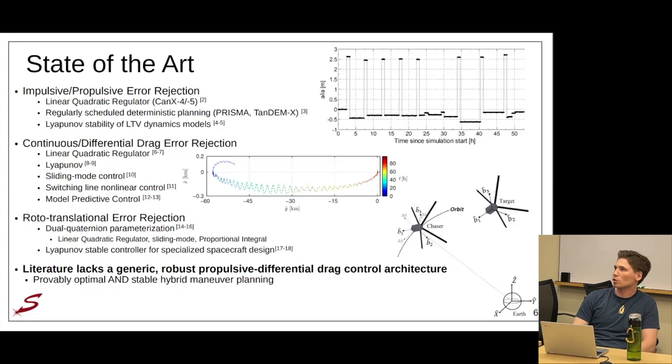Looking at the state of the art of error rejection, it's pretty extensive, especially in the area of propulsion. Error rejection techniques have been used in flight on missions such as CANX 4.5 with LQR, PRISM and TandemX with regularly scheduled cyclic deterministic maneuver planning, and proofs of Lyapunov stability of LTV dynamics models. Differential drag, or continuous control removing the impulsive assumption, has also been demonstrated to provide error-rejective properties through LQR, Lyapunov stability, sliding mode control, non-linear techniques, or even MPC using multiple objectives. The full rotational problem has also been analyzed using a dual quaternion parameterization and proofs of Lyapunov stability for specialized spacecraft design.